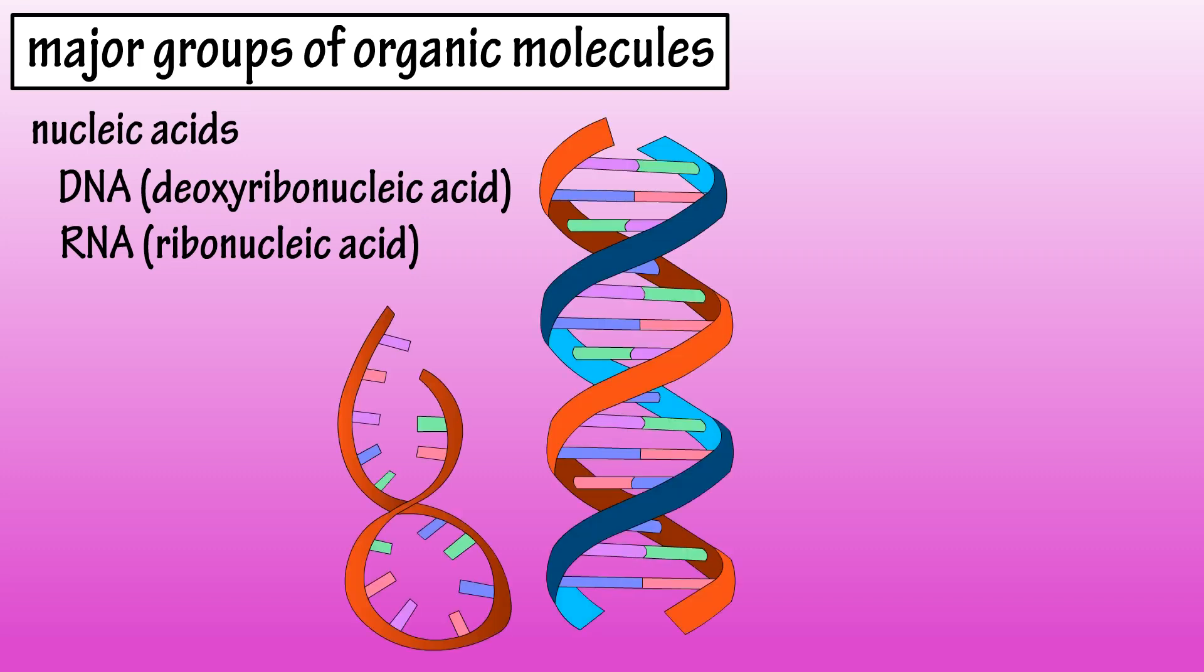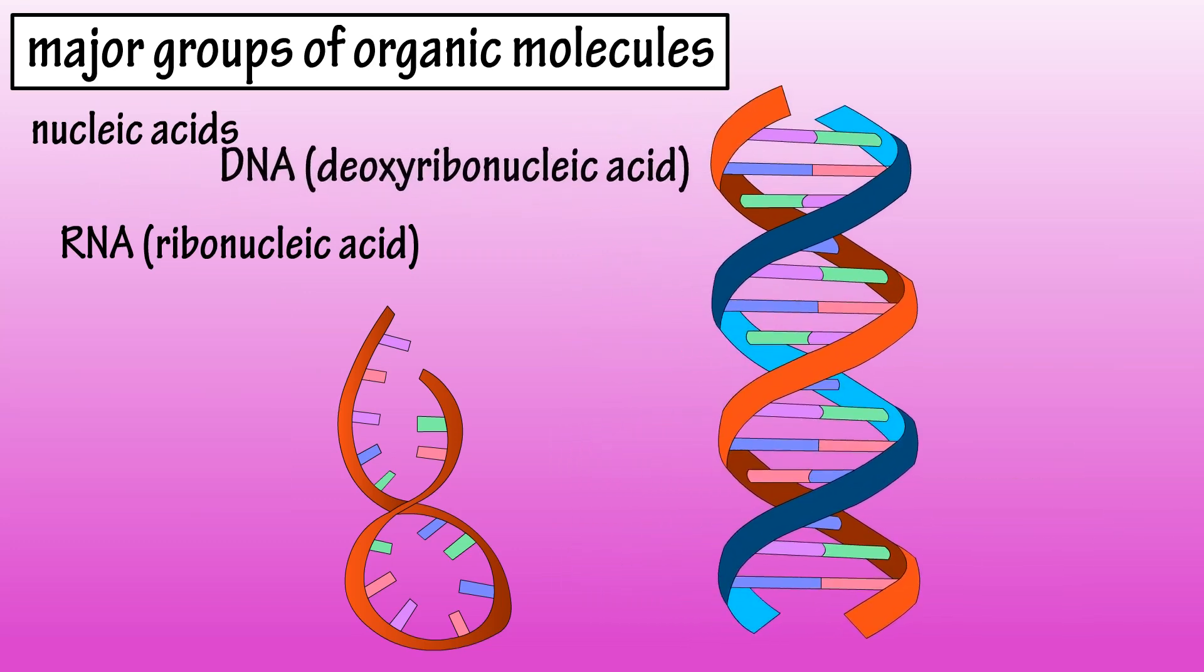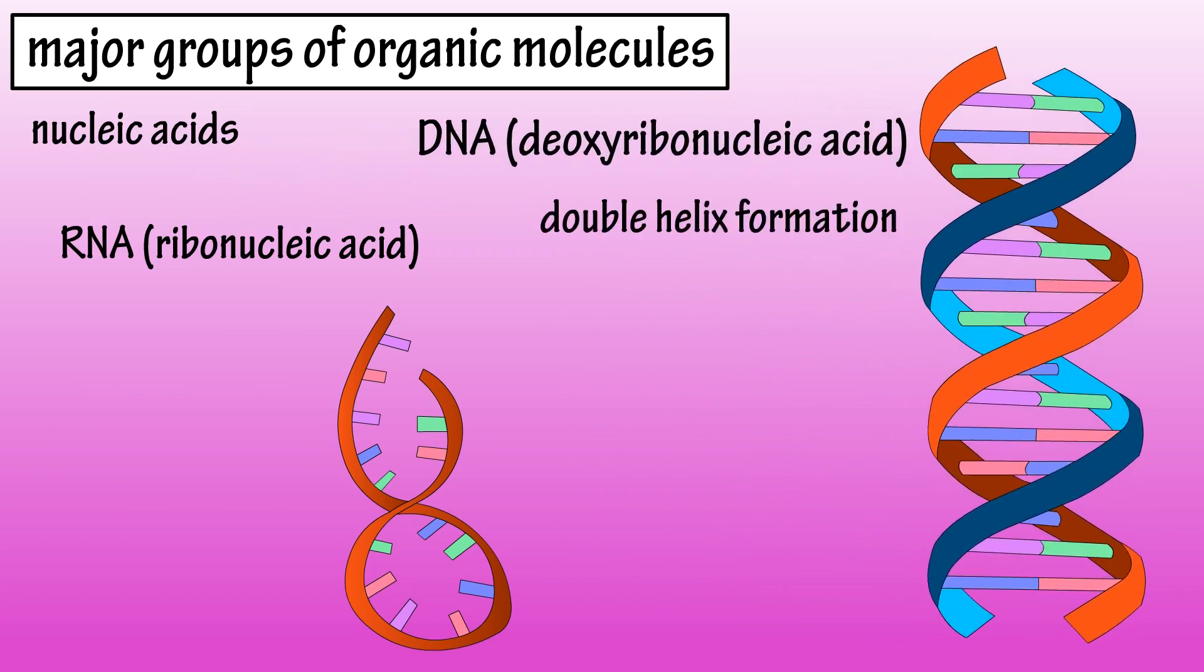Nucleic acids are large molecules that are made up of smaller molecules called nucleotides. The nucleotides in these molecules are linked together through covalent bonds and through hydrogen bonds. DNA is a double-stranded nucleic acid, and its molecules take on a double-helix formation.